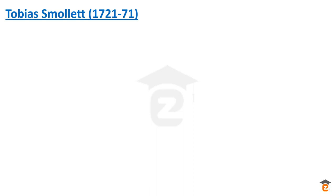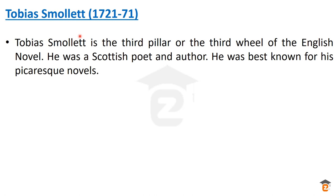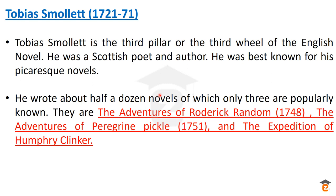Tobias Smollett lived from 1721 to 1771. He is the third pillar or third wheel of the English novel. He was a Scottish poet and author, best known for his picaresque novels. He wrote about half a dozen novels, of which only three are popularly known.